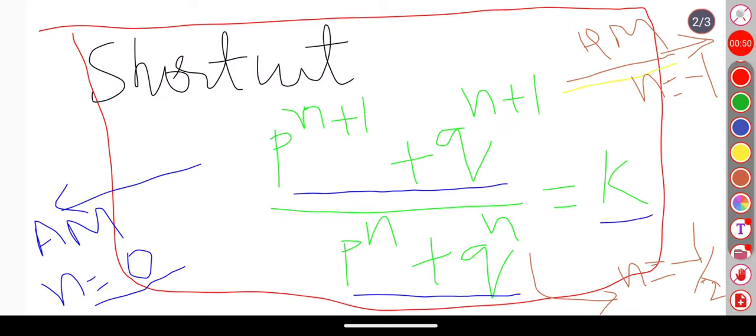The answer will be 0 when it is in arithmetic progression, the answer will be -1/2 when it is in geometric progression, and the answer will be n equals -1 when it is in harmonic progression.